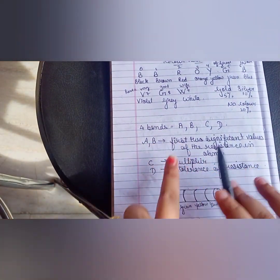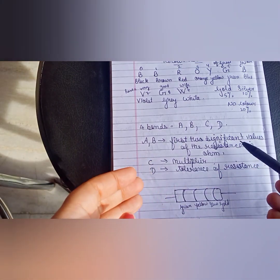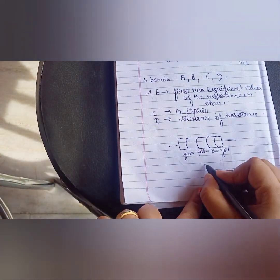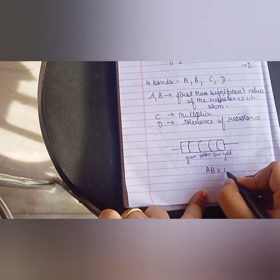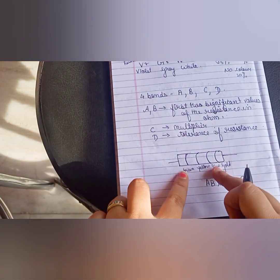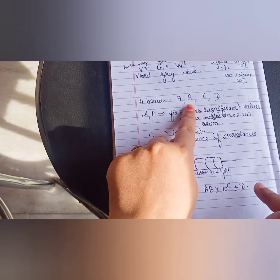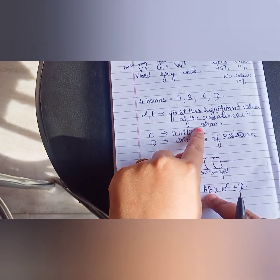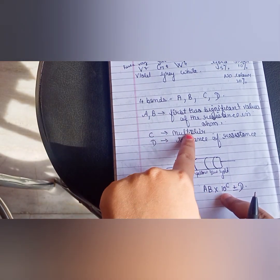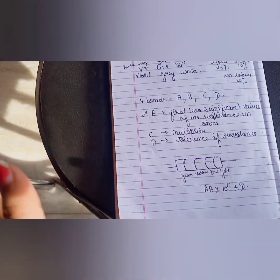So there are four bands A, B, C, D. What do we say about A and B? These are two values that are two-resistance. We use this formula, A, B into 10 to the power C plus minus D. We use this formula here. How do we convert the color in the number? A, B into 10 to the power C plus D. A, B, C, D. We have four bands. A and B means that it means resistance.